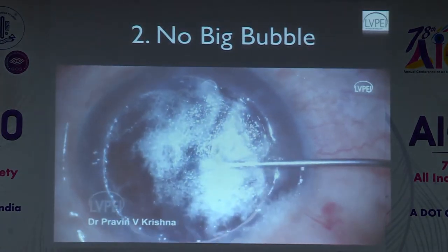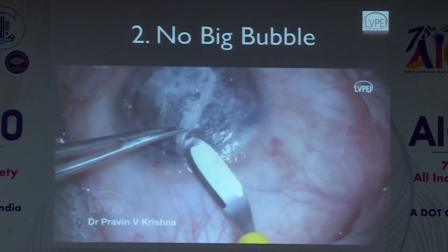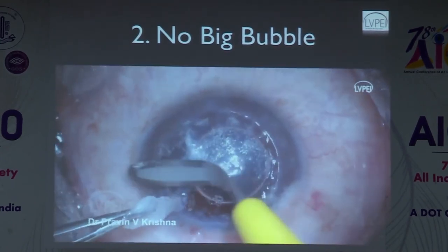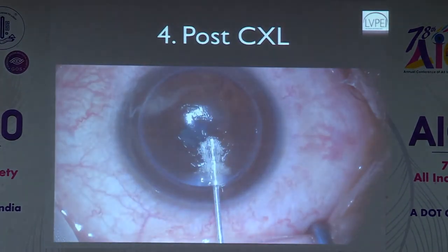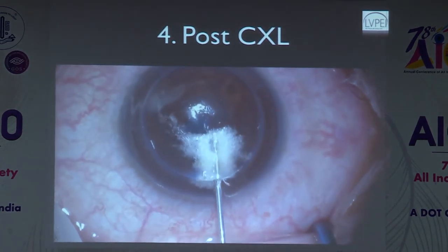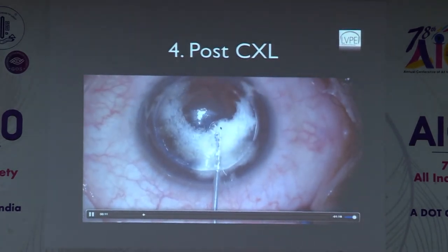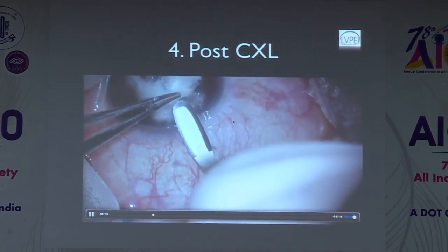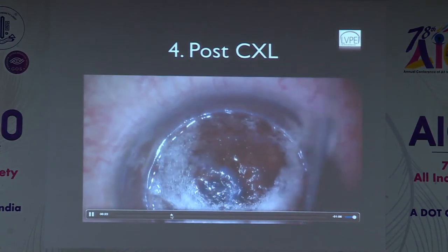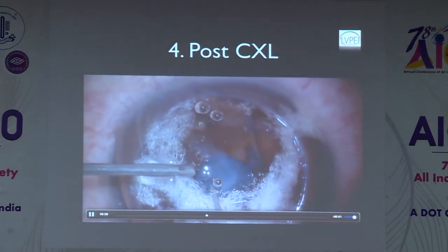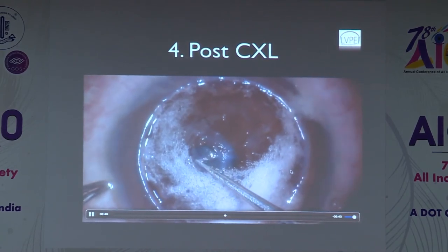Cases post-hydrops may not yield a big bubble — a scar in the posterior surface causes a blowthrough with a break in Descemet's membrane. In cross-linked corneas, injecting a bubble is difficult because the cornea is more compact; you get only small bubbles that refuse to expand. In such cases, debulk and go as deep as possible, then attempt manual dissection. Find one of the small deeper bubbles, access it, and dissect to the correct plane to achieve adequate depth.